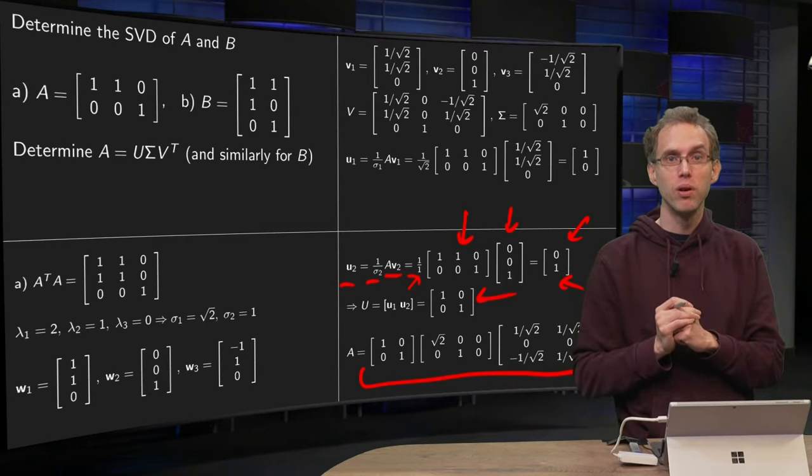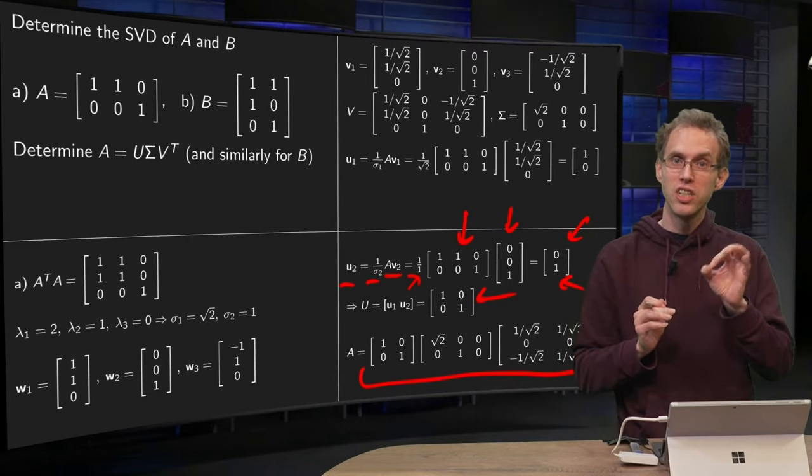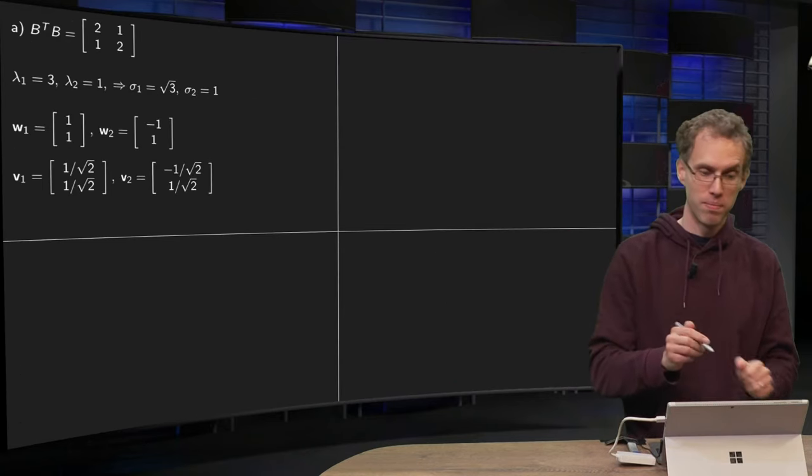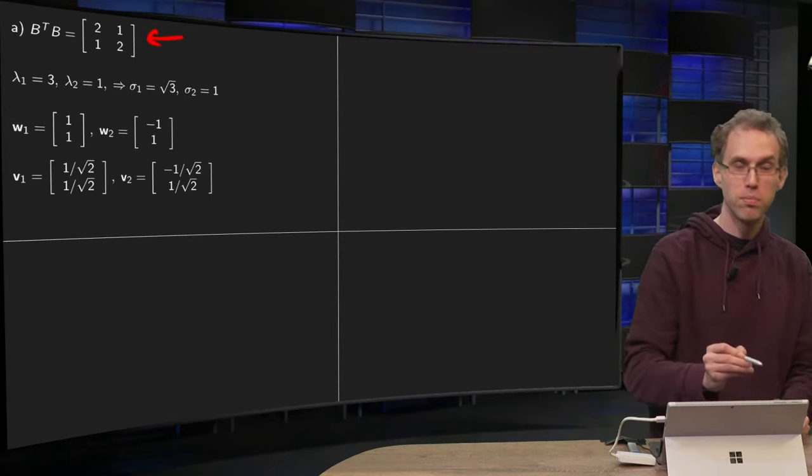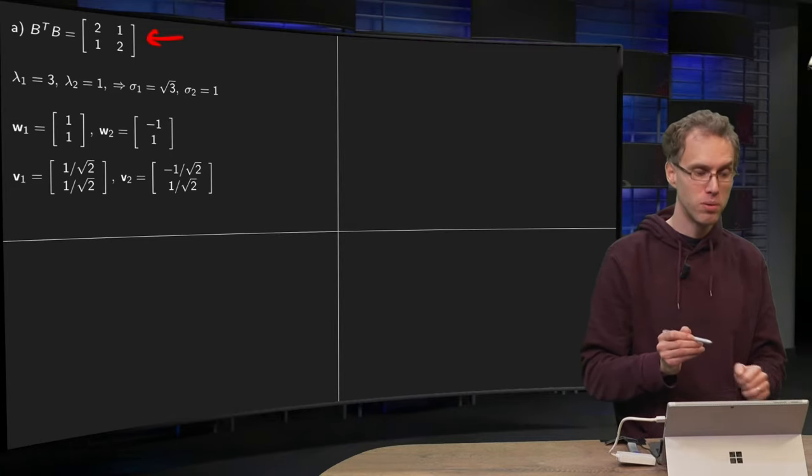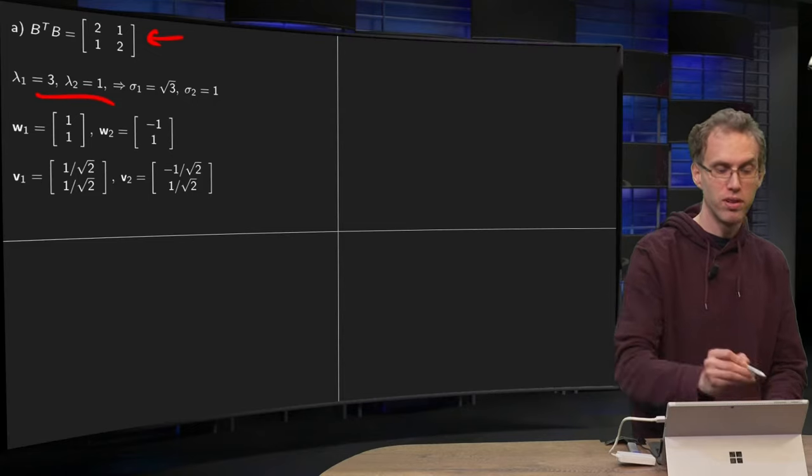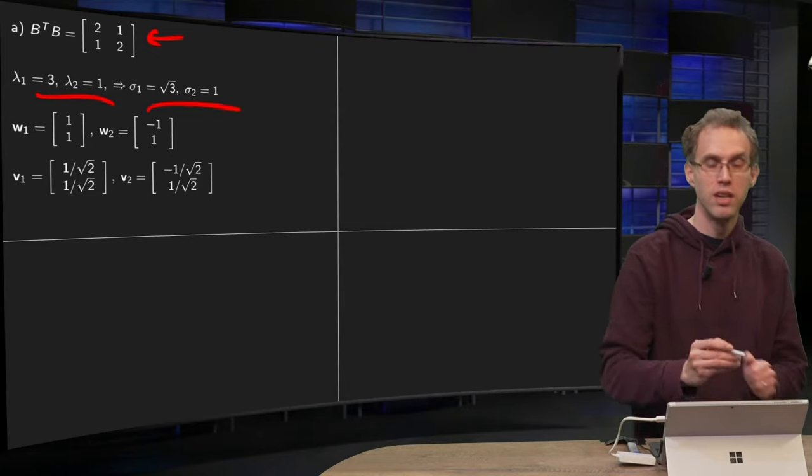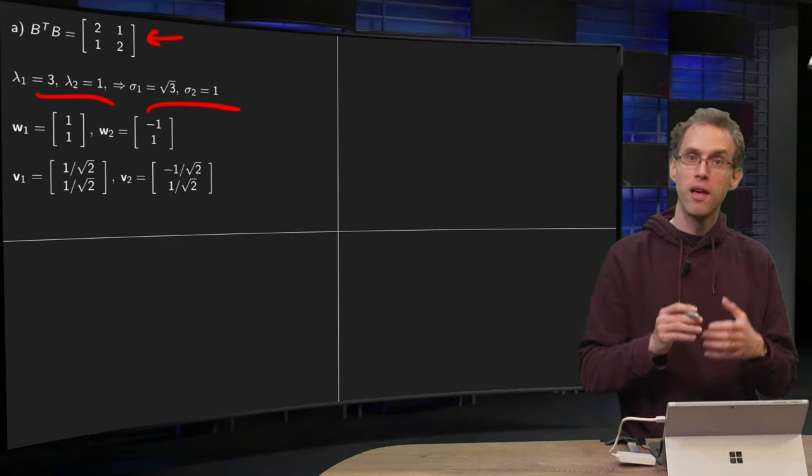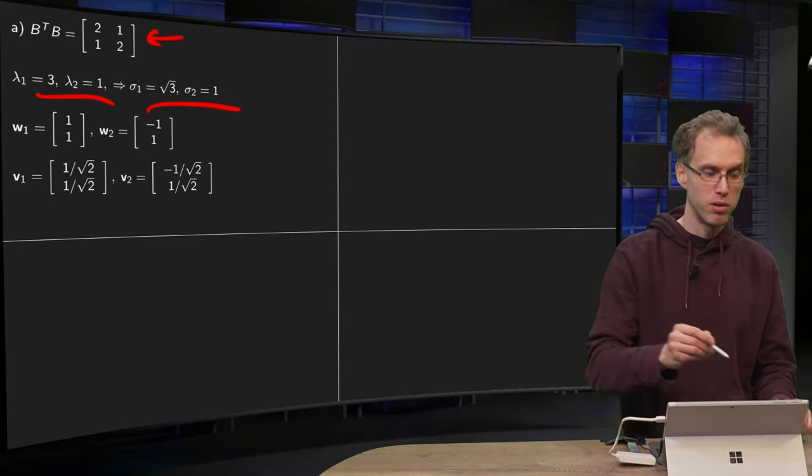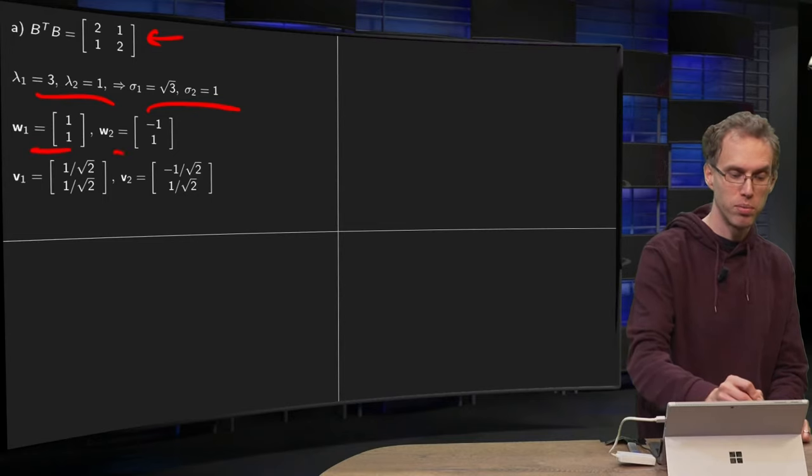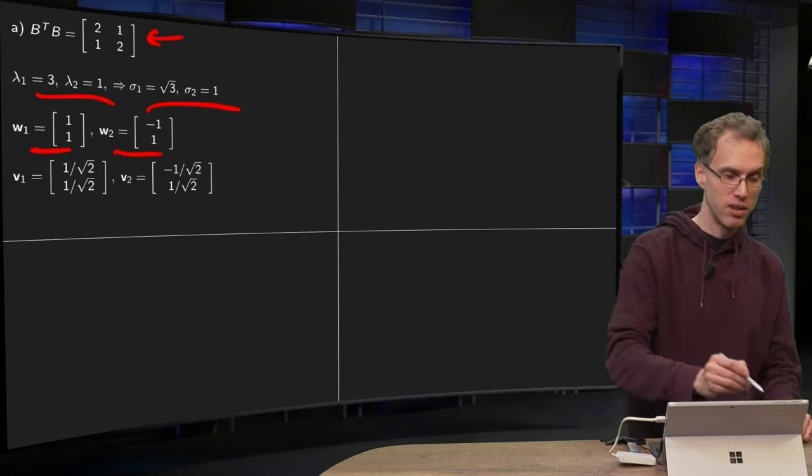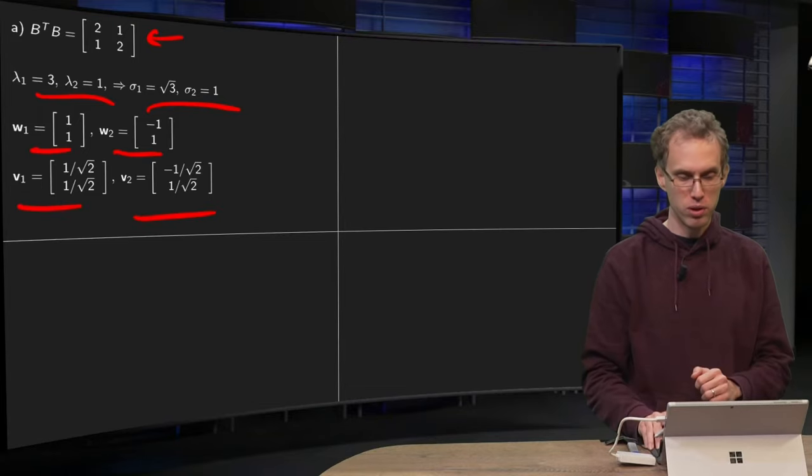Let's move on to the matrix B, because there is a slightly tricky part somewhere, as you will see. First part goes similarly. Compute your B transpose times B, 2 by 2. Now your eigenvalues will be 3 and 1, as we did in an earlier video, so your singular values will be the square root of 3 and 1. Compute the eigenvectors first without bothering about norms: W1 equals (1, 1) and W2 equals (-1, 1), and then you need to normalize again to get your V1 and V2. So far, so good.